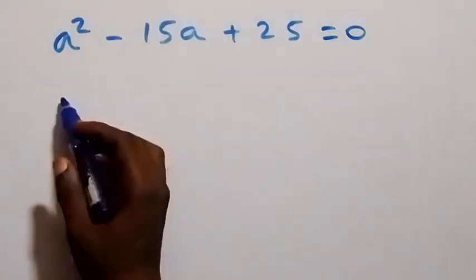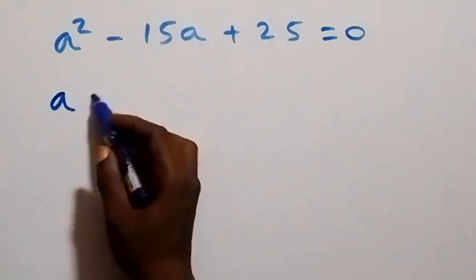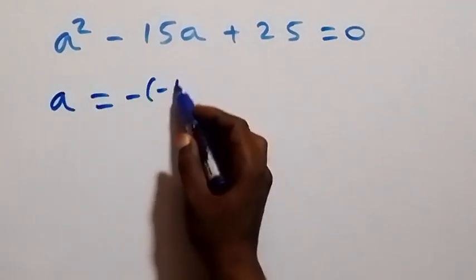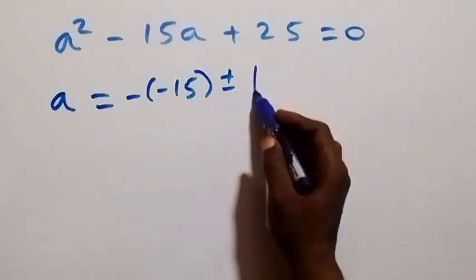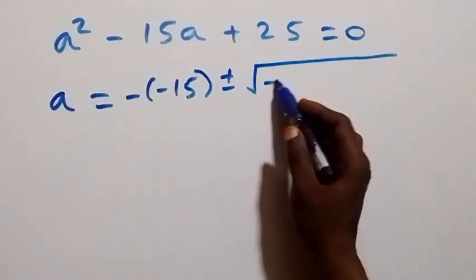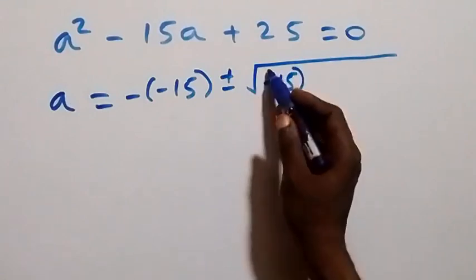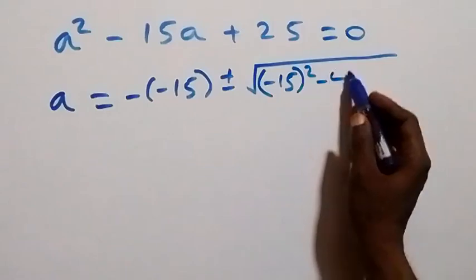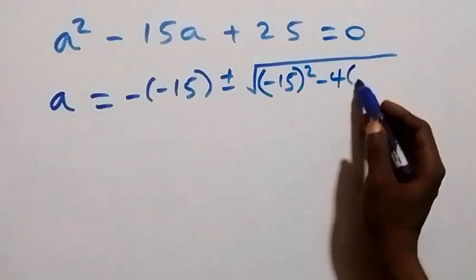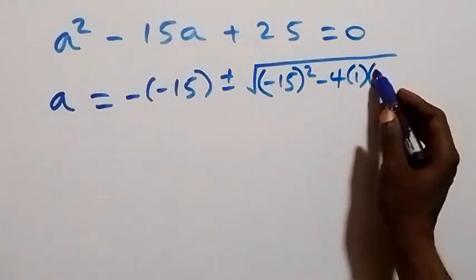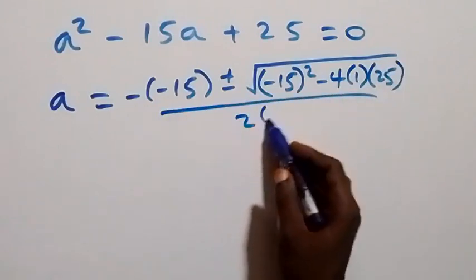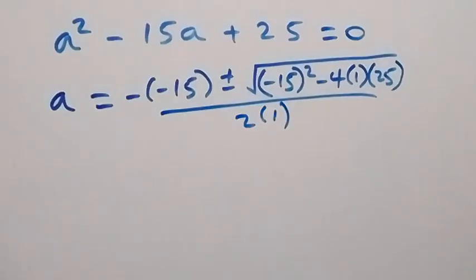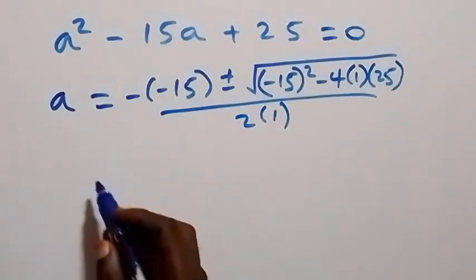We can solve this directly using the quadratic formula. This becomes a equals to negative of negative fifteen, plus or minus the square root of negative fifteen squared minus four times one times twenty-five, all over two times one.